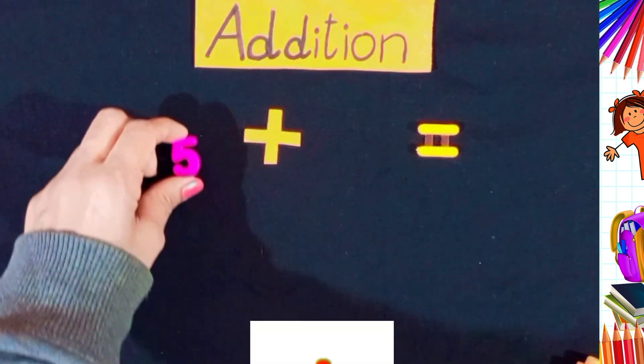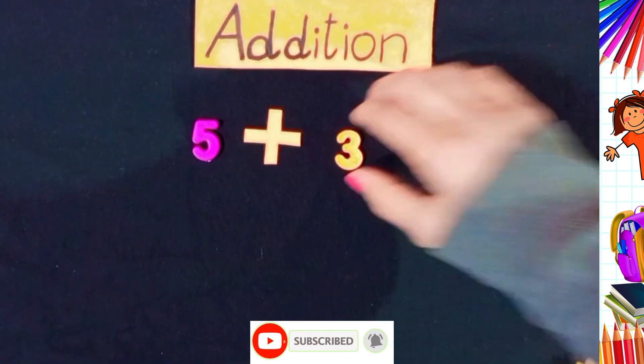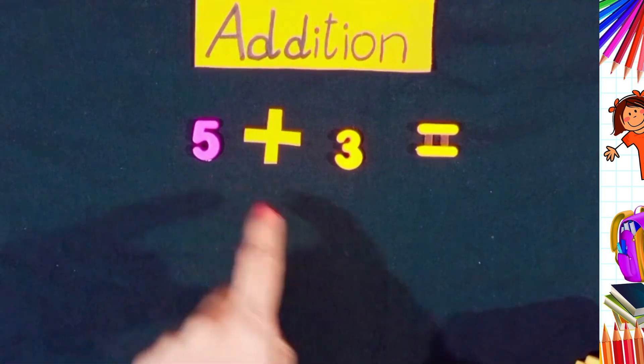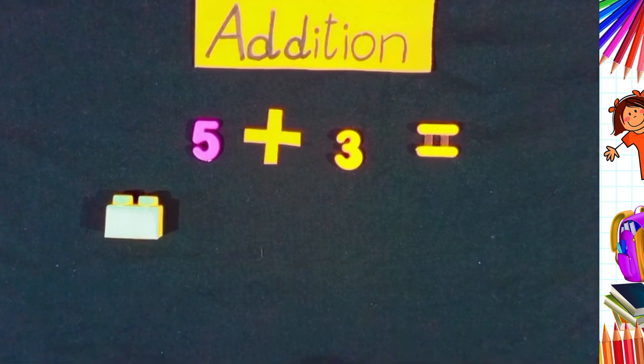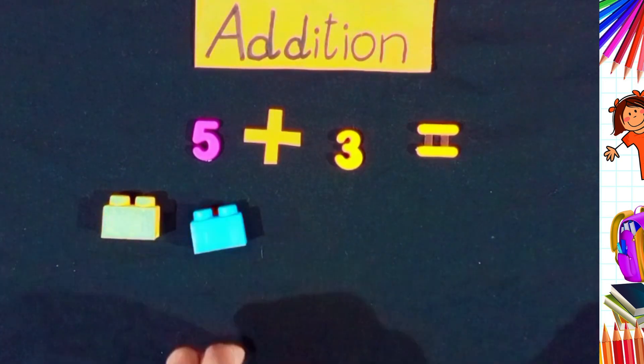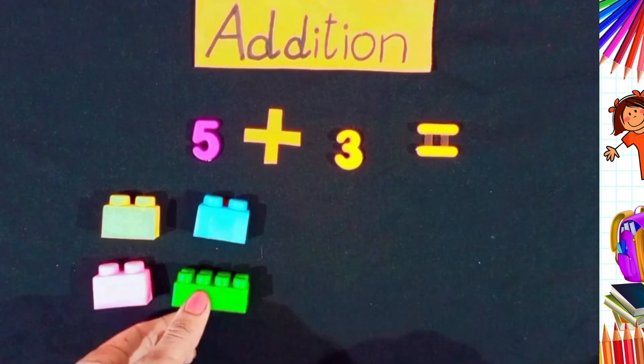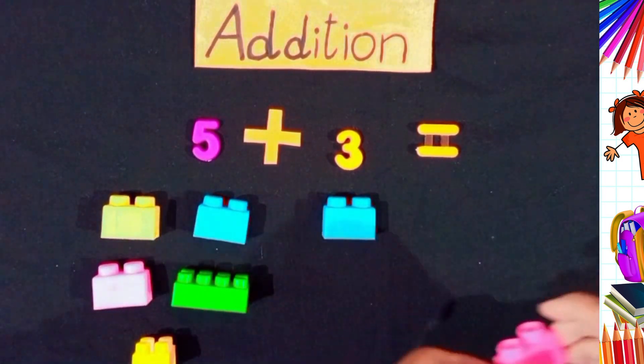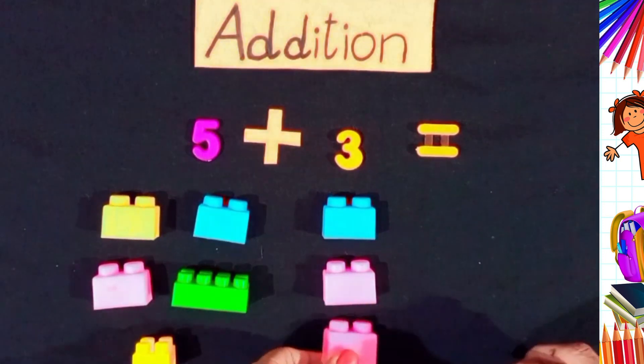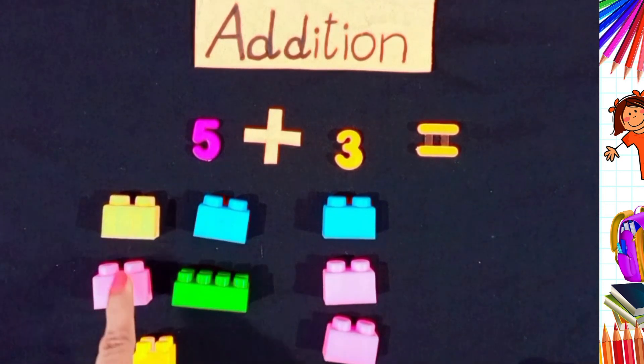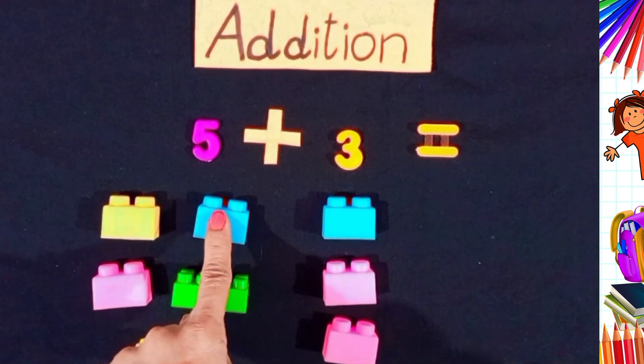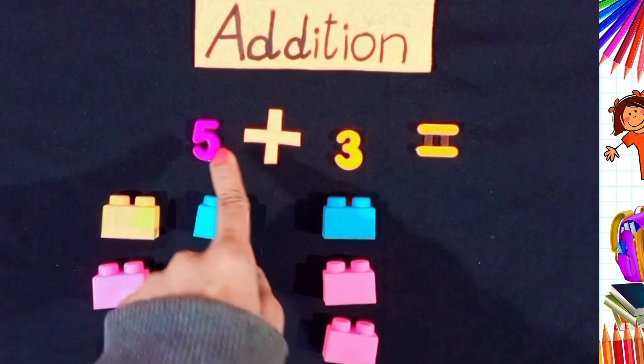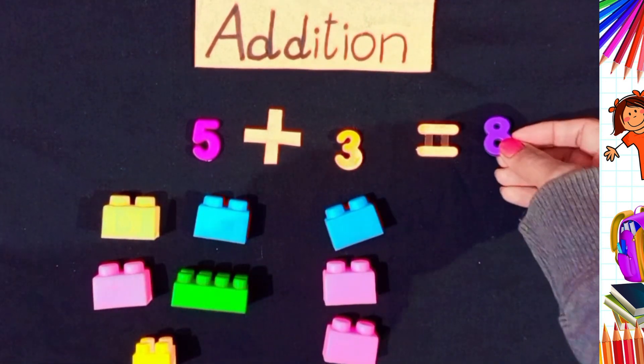Now, next is 5 plus 3. 5 plus 3 equals to what? 5. Let's have 5. 1, 2, 3, 4, and 5. 3. 1, 2, 3. Let's count. 1, 2, 3, 4, 5, 6, 7, 8. 5 plus 3 equals to 8.